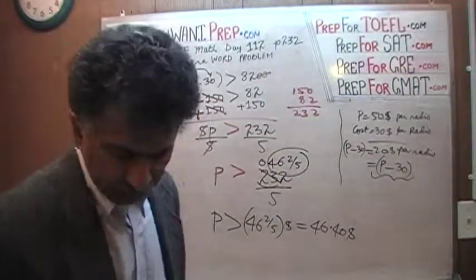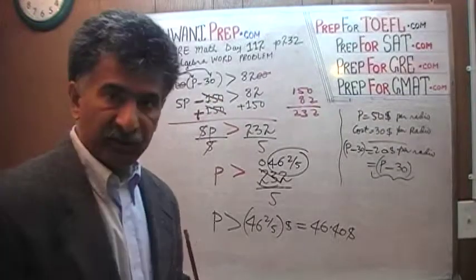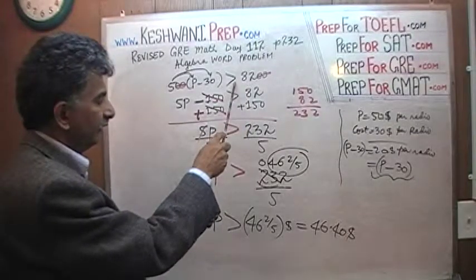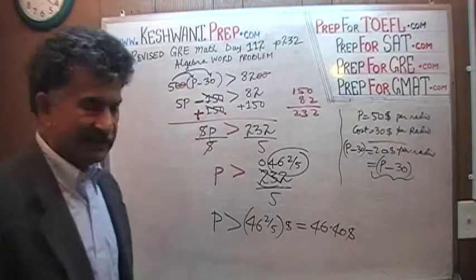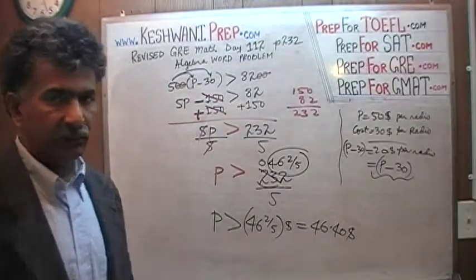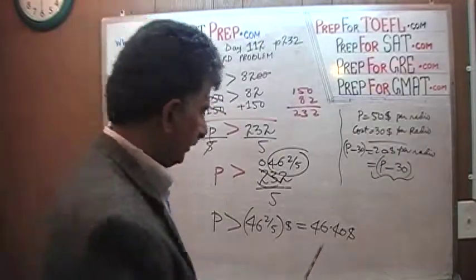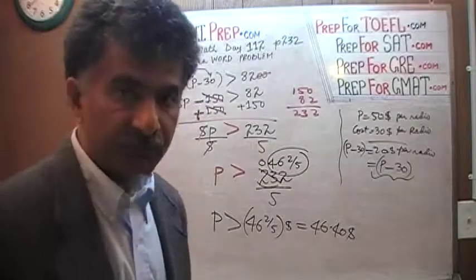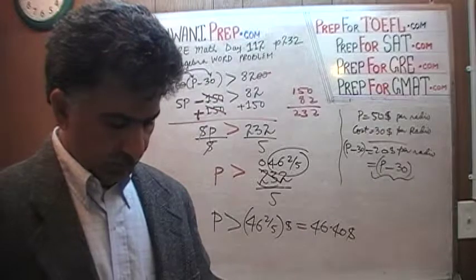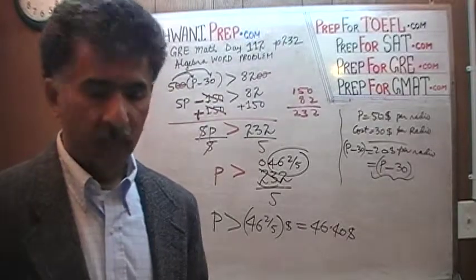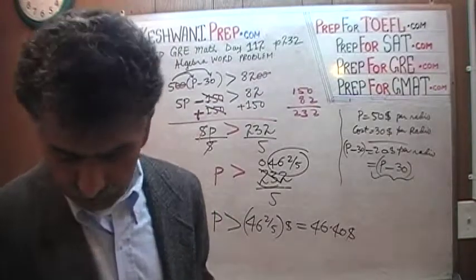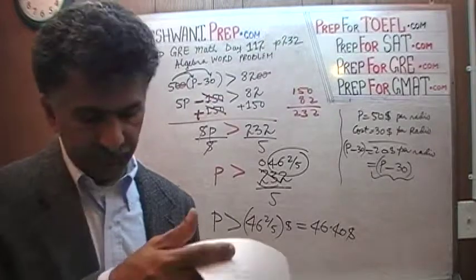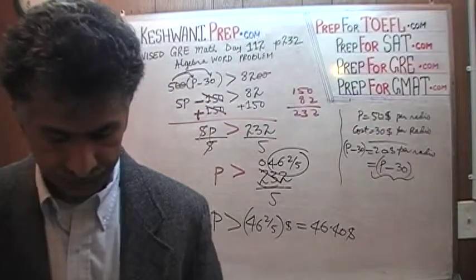That's it. If the manufacturer wants to make sure he gets a profit of more than $8,200, he has to charge a price of more than $46.40 — there is no equal sign here. Starting from tomorrow, we'll start problems dealing with interest rates — first simple interest rate, then compound interest rate. Those are the last topics under algebra, and then we start geometry. I'll see you tomorrow — bye!